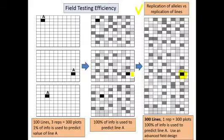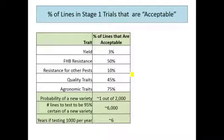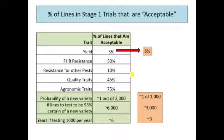And as we know from unit 1, testing more lines is a tremendous benefit to your breeding program. Looking at some of the benefits: the graph of the table I've shown several times — my probability of the target variety without any marker-assisted selection or genomic selection is 1 out of 2,000. Let's say I do genomic selection for yield, and now instead of only 3% of lines entering testing being acceptable for yield, it's now 6%. Genomic selection is not going to guarantee that the lines you select are great — it's just going to improve your probability of lines being good.